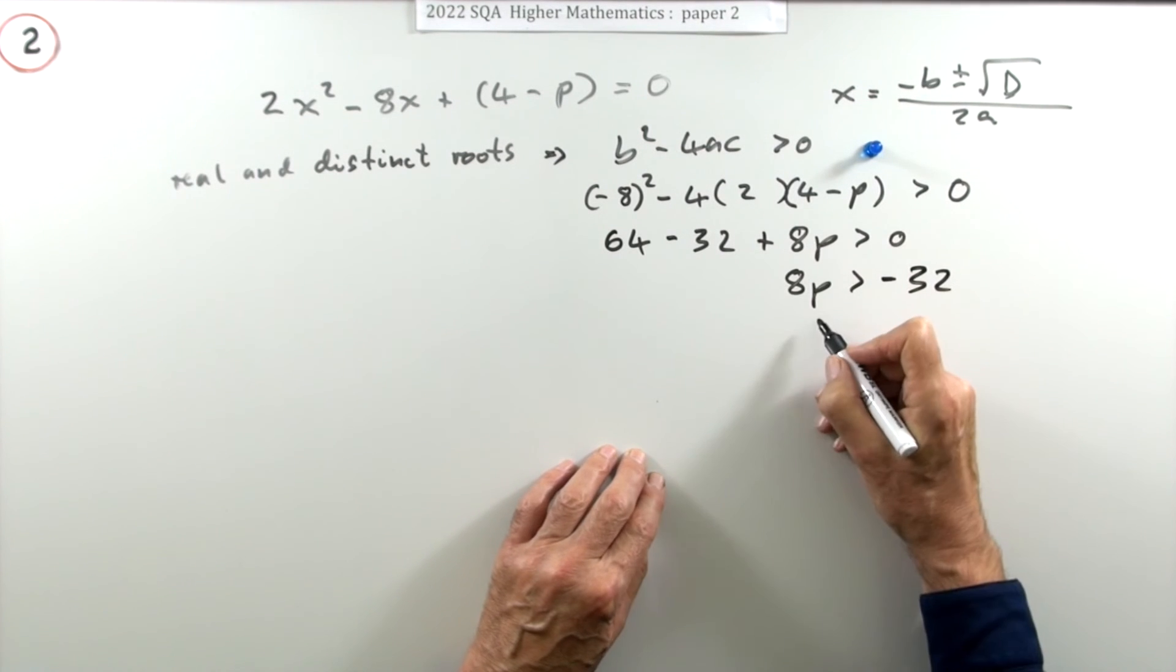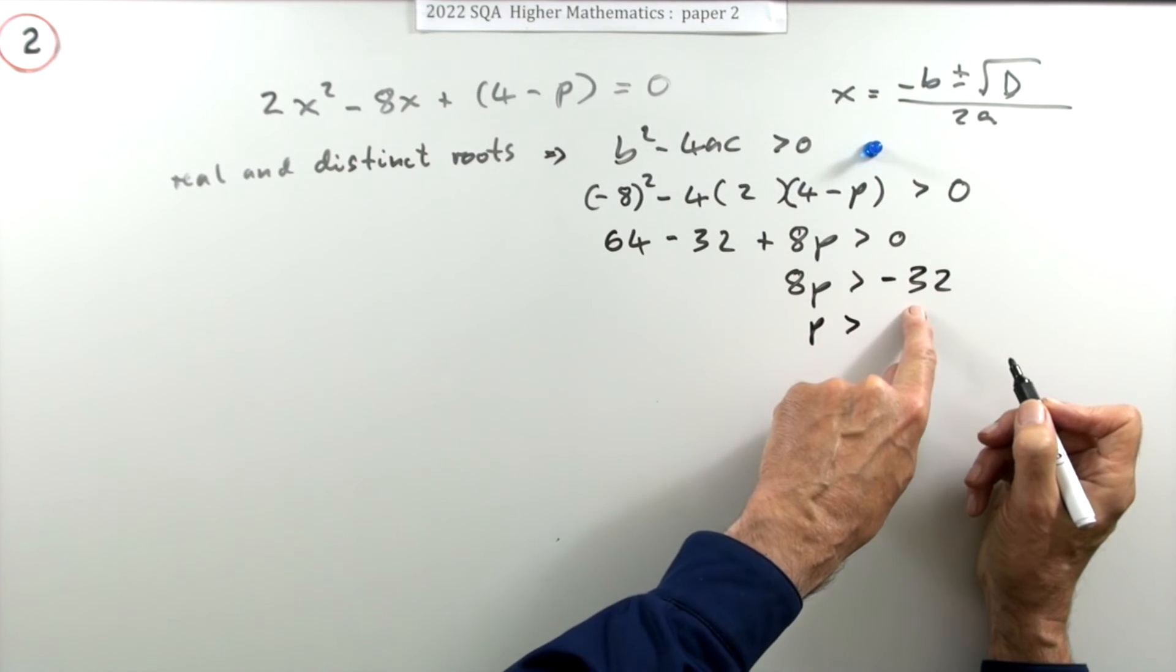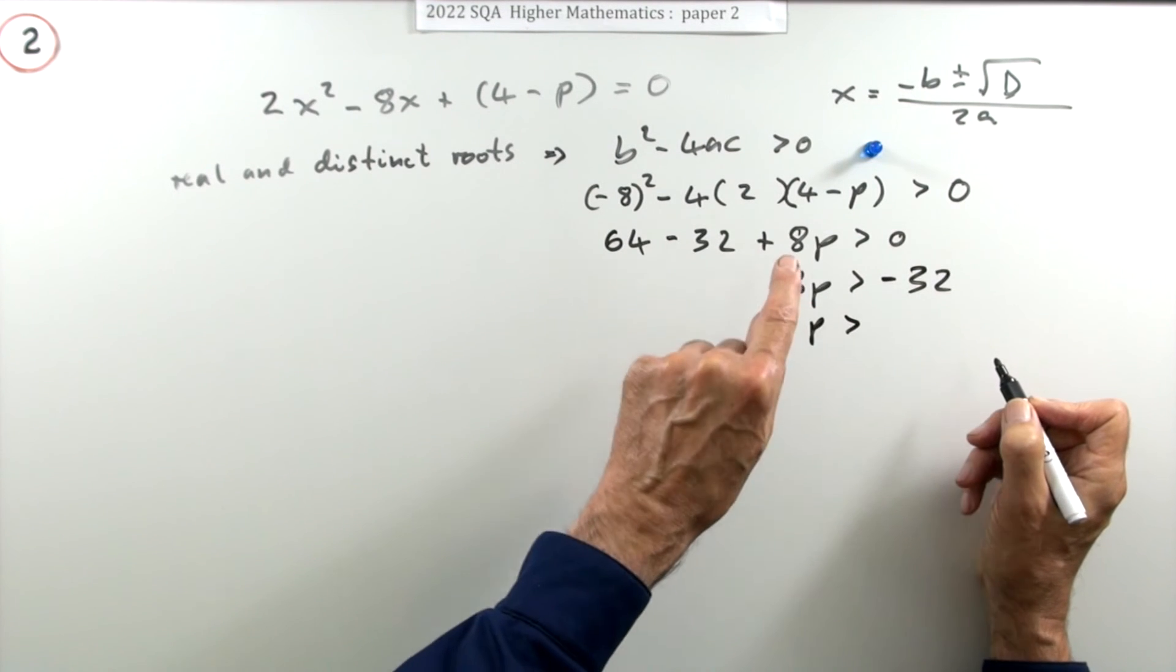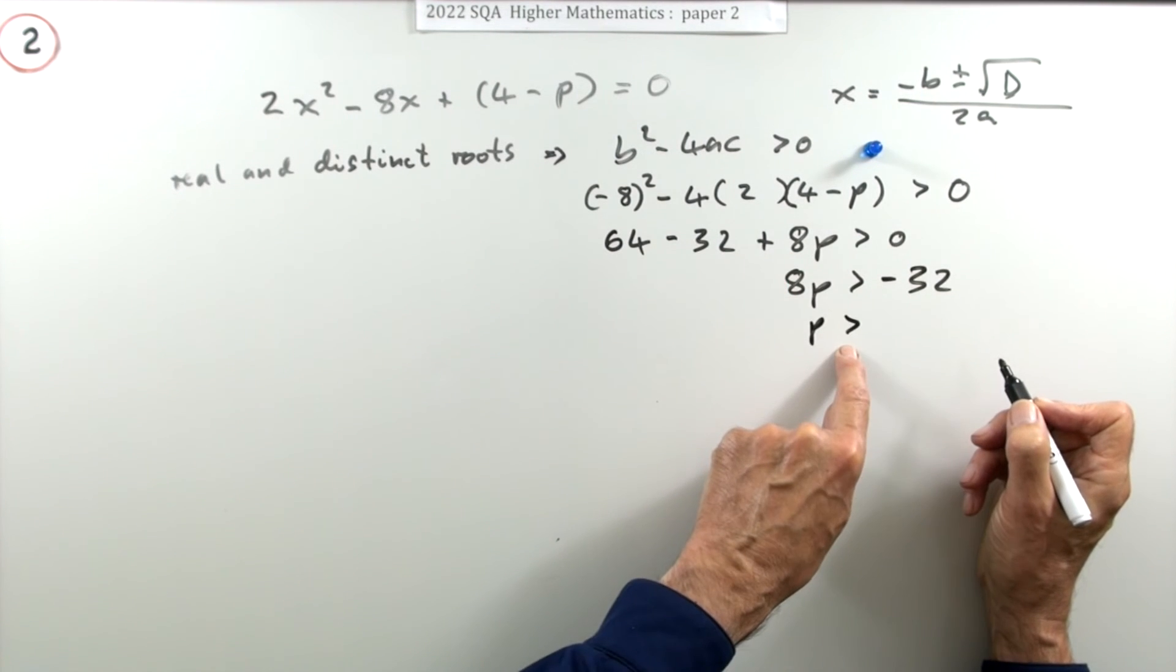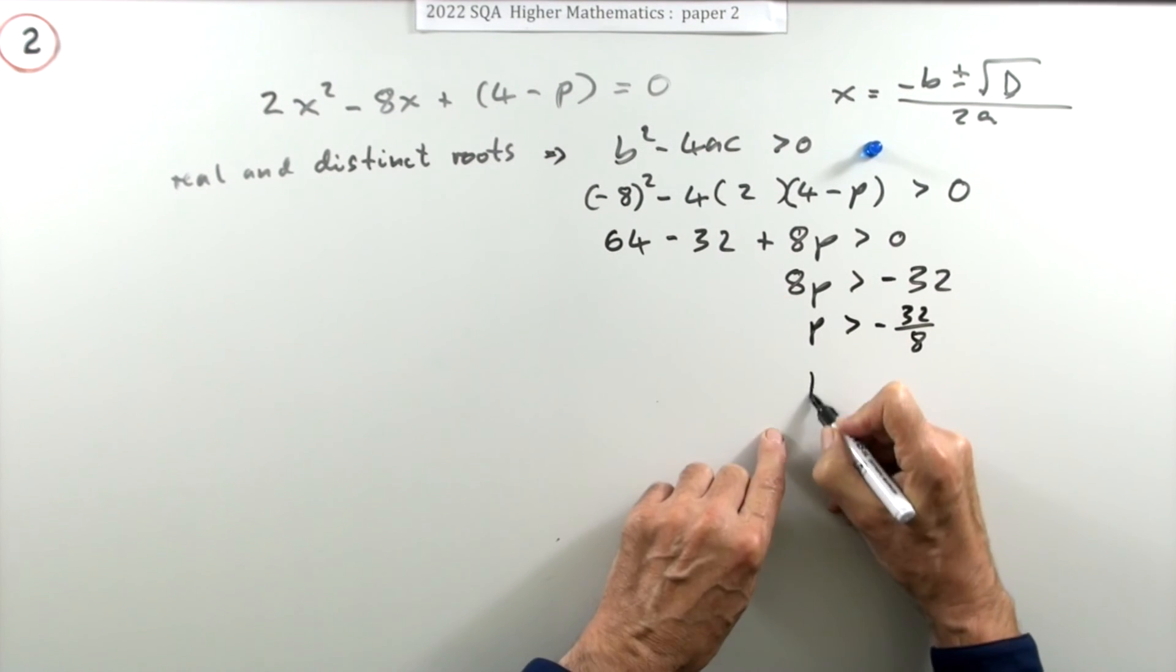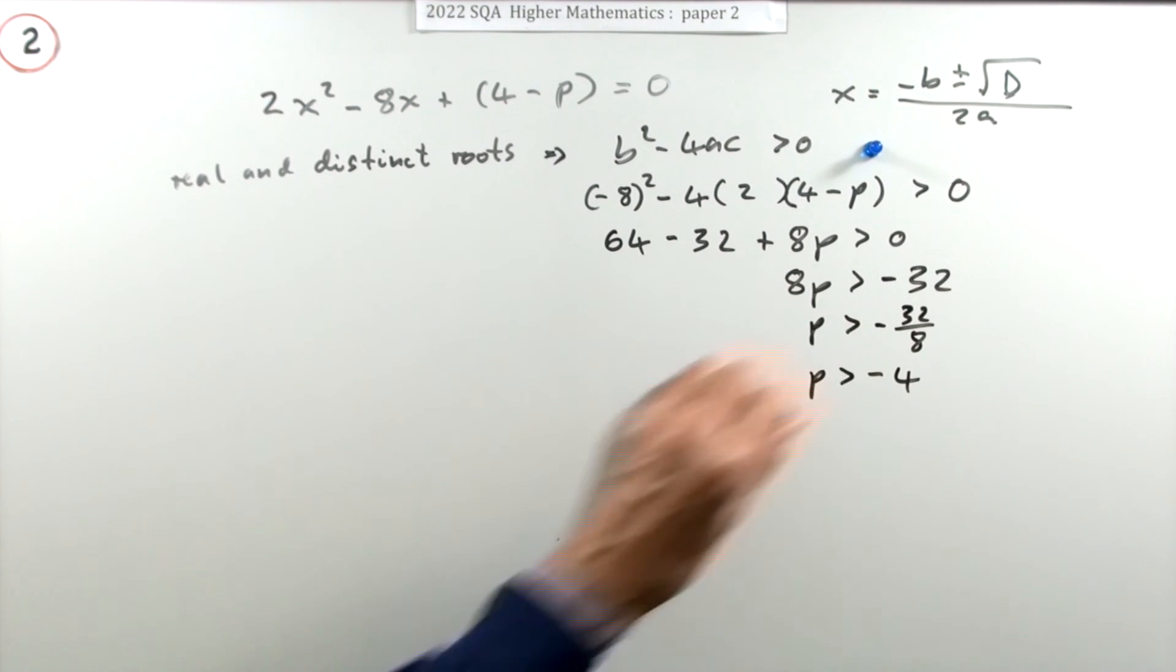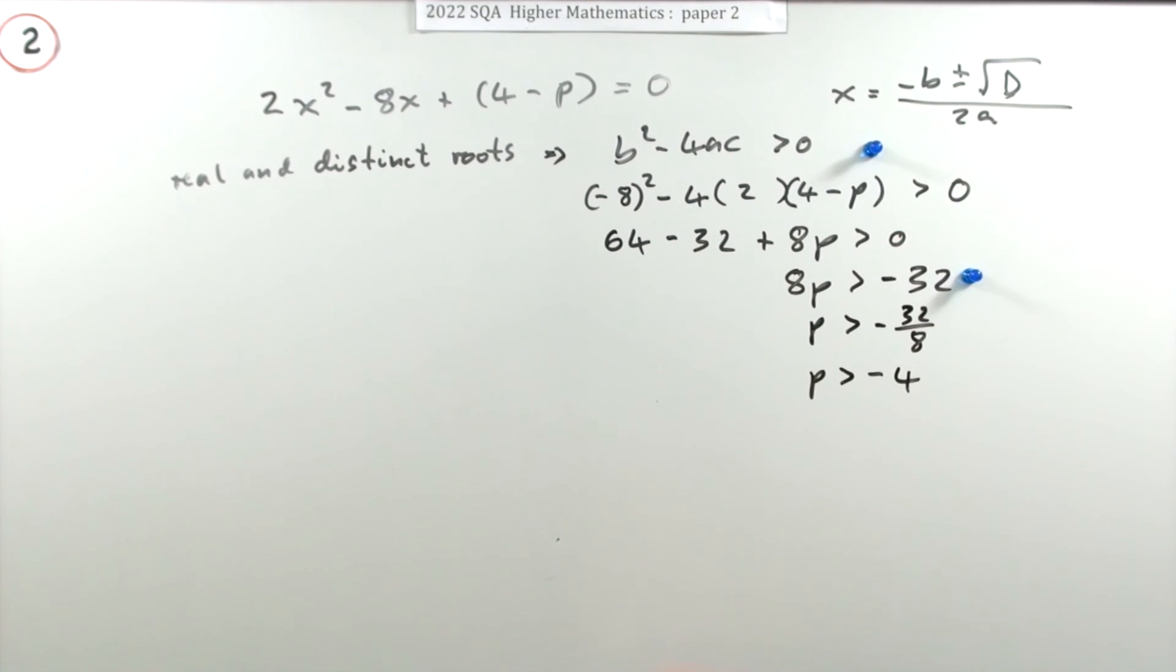64 take away 32 is 32, but bring it over, it safely goes across as negative 32, which means that p has to be greater. Now you can divide by 8 quite safely, that's a positive number. That'll be negative 32 upon 8, so p is greater than negative 4. Getting it down to that line actually got the second mark. There's the final answer.